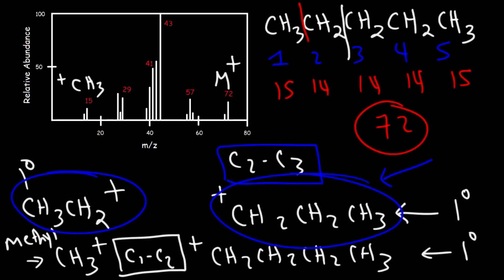It's important to understand that both of these cations can rearrange to a more stable secondary carbocation. But the reason why this is the base peak is because it's easier to break the C2-C3 bond due to the formation of more stable carbocation fragments. This one is less stable so it's going to be harder to form, and so that's why this corresponds to the base peak.